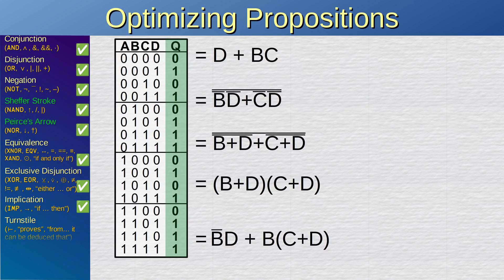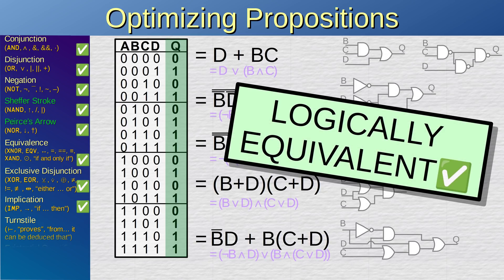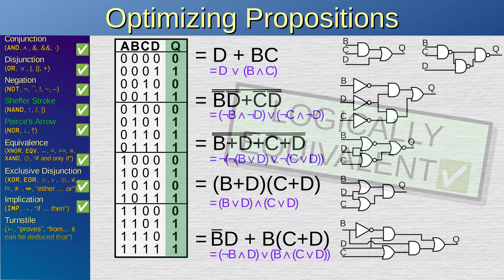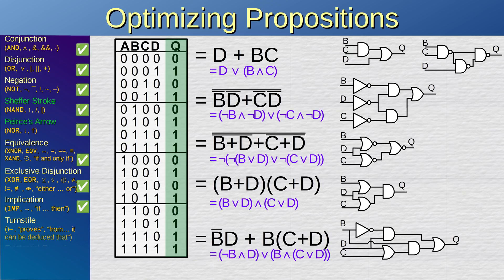Now we have a total of five distinct logical expressions that all fulfill the same truth table — in other words, they are logically equivalent. I have also drawn a circuit diagram corresponding to each of these expressions. You can maybe now appreciate how digital engineering is as much an art as it is a science.